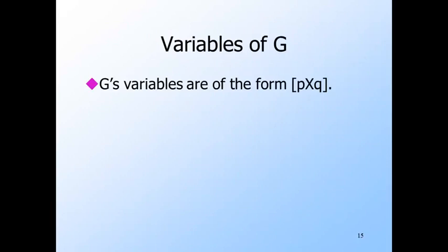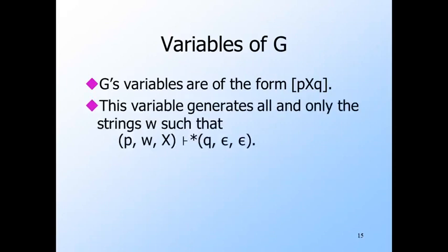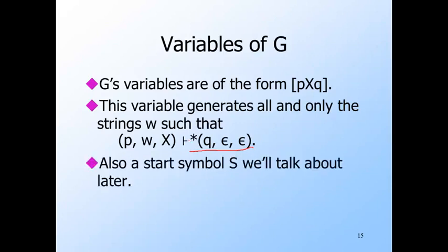As we mentioned, for every pair of states p and q and stack symbol X, there is a variable that we represent by the composite symbol [p, X, q]. Although this expression consists of five characters, you must think of it as a single symbol in the set of variables of G. Also, as we hinted, the job of [p, X, q] is to generate all strings W that have the effect of taking PDA P in state p with only X on the stack to the ID where the state is q, the input has been consumed, and X was popped. Notice that since the initial ID shows nothing below X on the stack, we know that X can't be popped until the last step, since the PDA P cannot make any moves when its stack is empty.